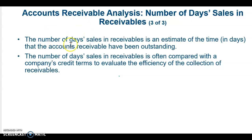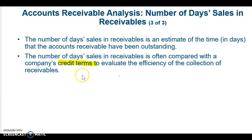The number of days of sales in receivables is an estimate of time in days that accounts receivable have been outstanding. It is usually compared with the company's credit terms to evaluate how efficient they are at collecting those receivables. We do not want that number to be longer than the actual credit terms, because that means we are having trouble collecting from our customers and may have to change our credit terms.